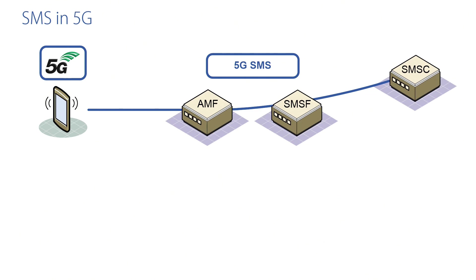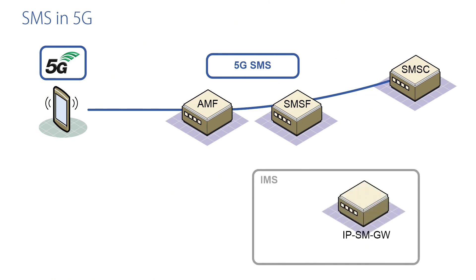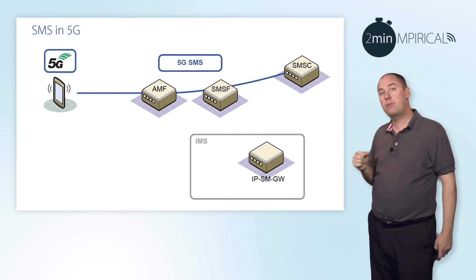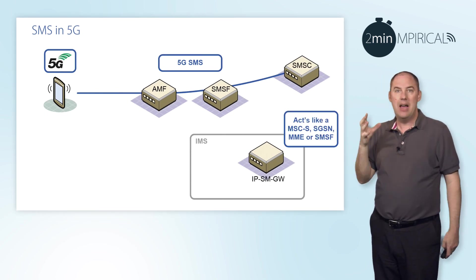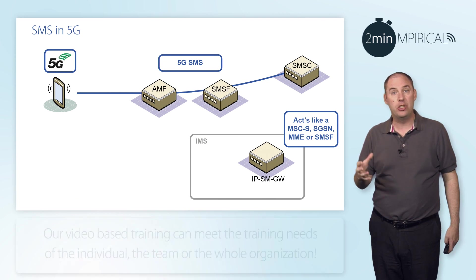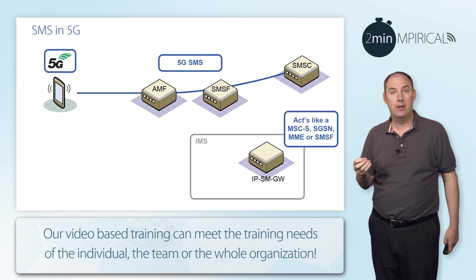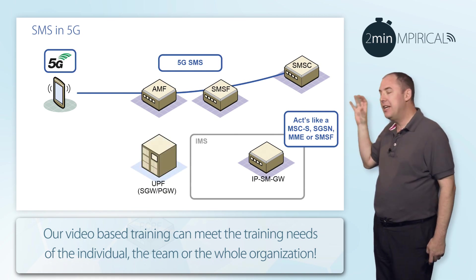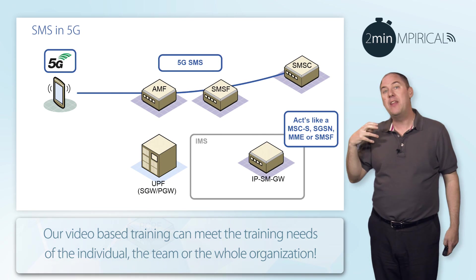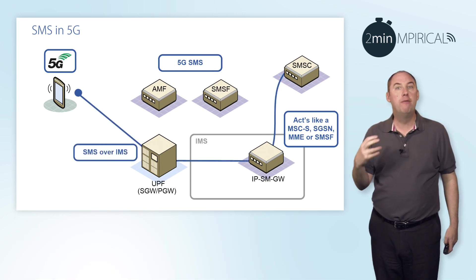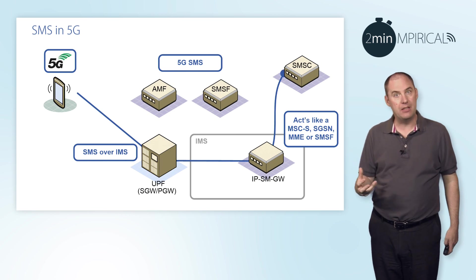To recap, in 4G we could also do SMS via the IP multimedia subsystem, the IMS. In that scenario, we would have an IP short message gateway, which would act as an MSC server, an MME, or an SGSN. But as you can see, it can now also act as the short message service function. Therefore, using a UPF — which is part of the 5G core — and the IMS infrastructure, we can also deliver SMS over IMS, utilising the 5G system.